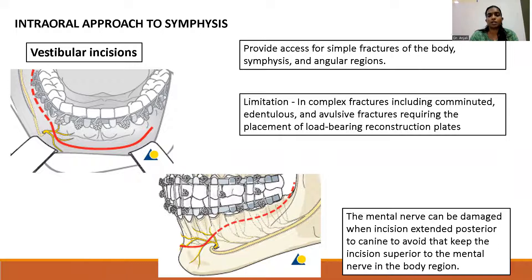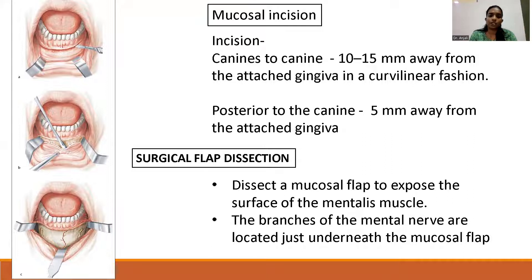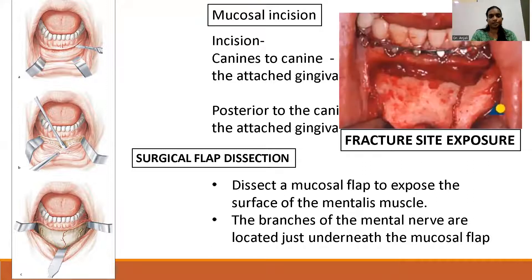If we cross the vestibular incision at the same level toward the parasymphysis region, the mental nerve can be injured. The mucosal incision runs canine to canine, 10-15 mm away from the attached gingiva, and posterior to the canine it is 5 mm away from the attached gingiva — curving upwards near the mental foramen. A direct mucoperiosteal flap is raised; we separate the mentalis muscle and identify the branches of the mental nerve on each side. This is the surgical exposure of the symphysis fracture.